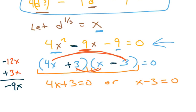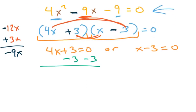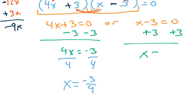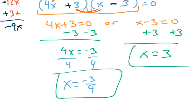And from here, it's basic algebra. We just solve. So we subtract 3, and this gives me 4x equals negative 3. And then to finish it off, we divide by 4, x is negative 3 fourths. And we do the same thing on the other side, it's just adding 3, so x equals 3.